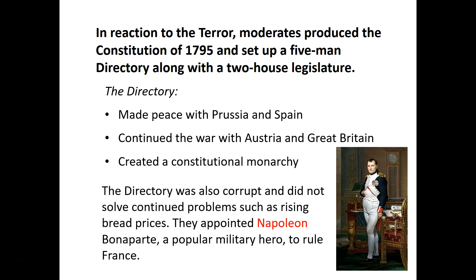The Directory had its own problems and its own level of corruption among its members. It was unable to resolve many of the basic need problems of the people — rising bread prices, inflation, and the like. As leader to rule France, the Directory selects Napoleon Bonaparte, one of those young military heroes who had turned the tide in France's battles with other European powers.